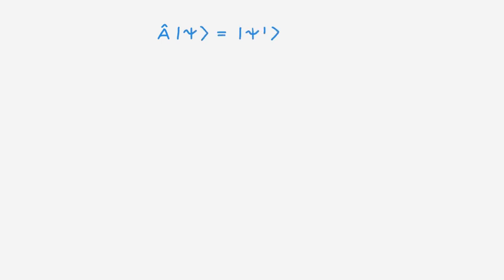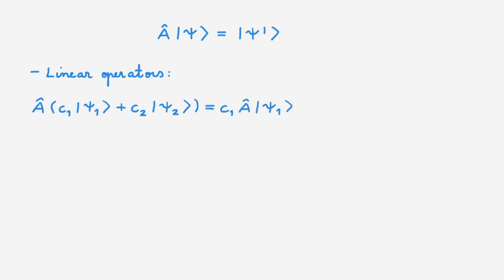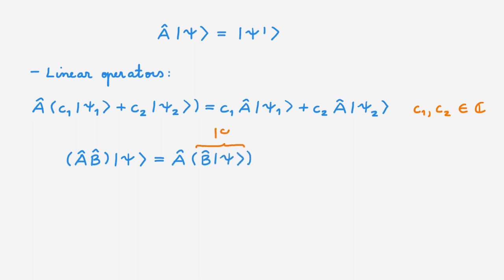An operator A acts on a state psi to give a new state psi'. In quantum mechanics we work with linear operators whose action on a linear superposition of two states is equal to the action on the first state plus the action on the second state, where c1 and c2 are complex scalars. The product of two operators A and B is defined by its action on a ket: we first act with B on psi, which gives a new state phi, and then the action of A on phi gives another state chi.